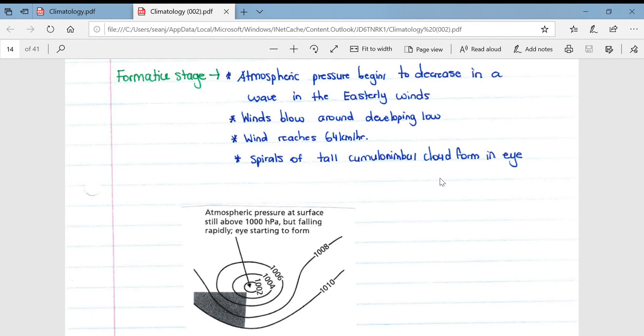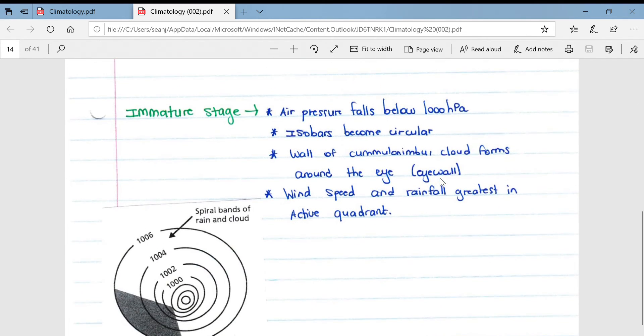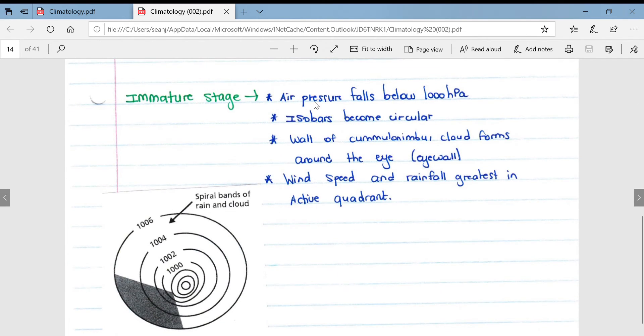If we go to the immature stage, the air pressure falls below 1000 hectopascals at the center. The isobars become circular as seen in this diagram. A wall of cumulonimbus clouds forms around the eye, which is known as the eye wall. The wind speed and rainfall are greatest in the active quadrant. So what this active quadrant is is essentially the shaded out area.